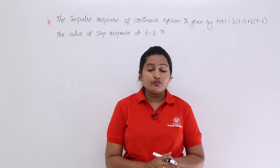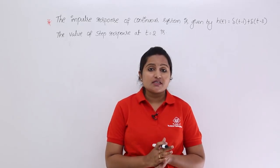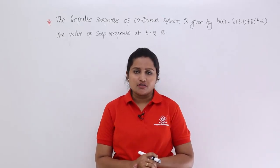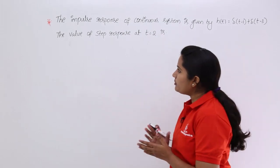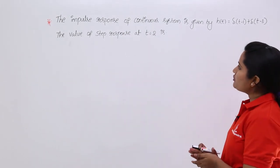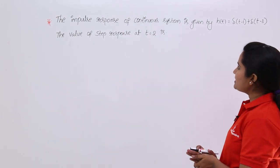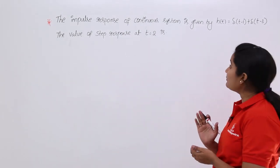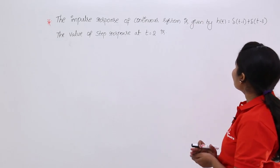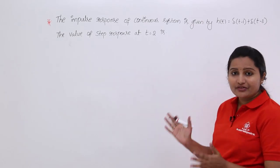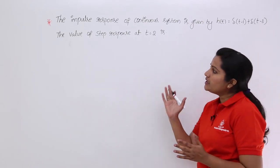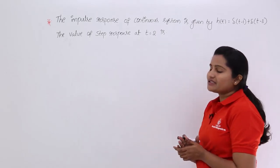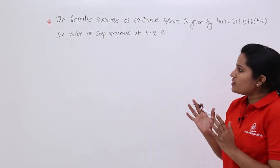In this video, we are going to discuss a problem related to convolution. The impulse response of a continuous system is given by h(t) = δ(t−1) + δ(t−3). The value of the step response at t = 2 is to be found.